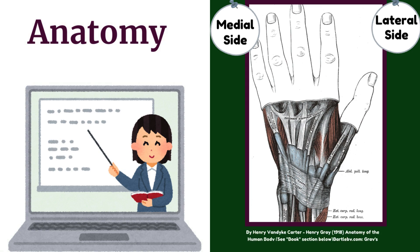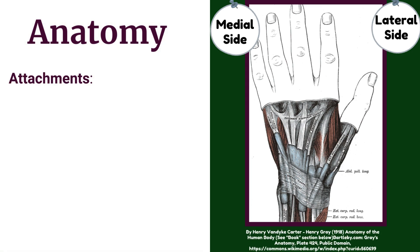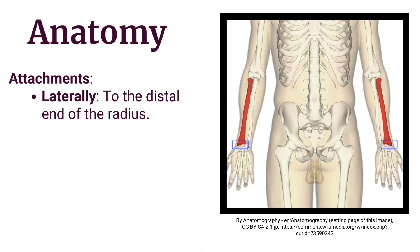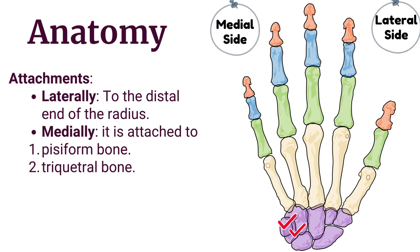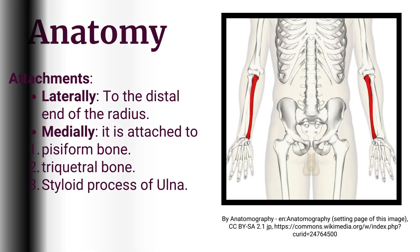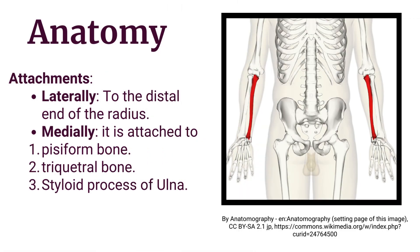Anatomy of extensor retinaculum — Attachments. Laterally, it is attached to the distal end of the radius. Medially, it is attached to the pisiform bone, triquetral bone, and the styloid process of the ulna.